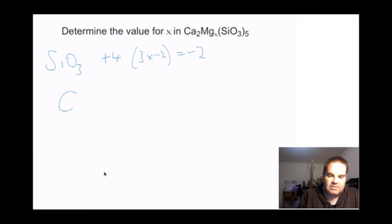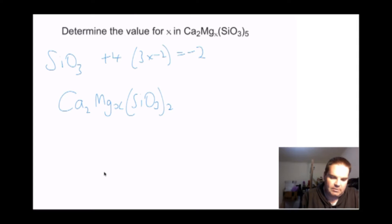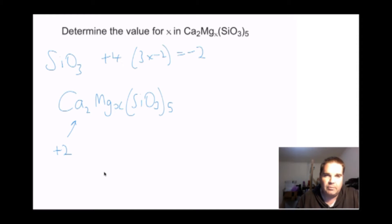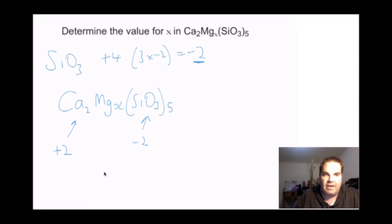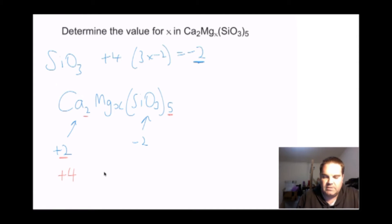So we have Ca2MgxSiO3(5). Calciums are in group 2 so they have a plus 2 charge. The silicates have a minus 2 charge. There are 2 calciums at plus 2 — overall plus 4. There are 5 silicates at minus 2 — overall minus 10.